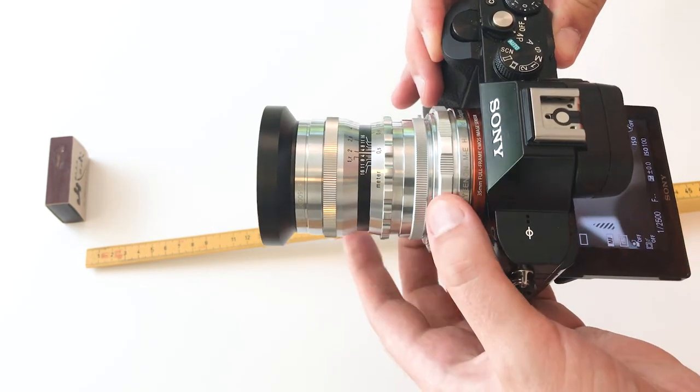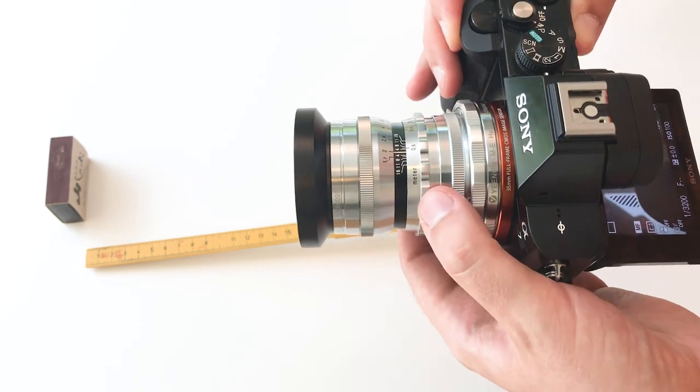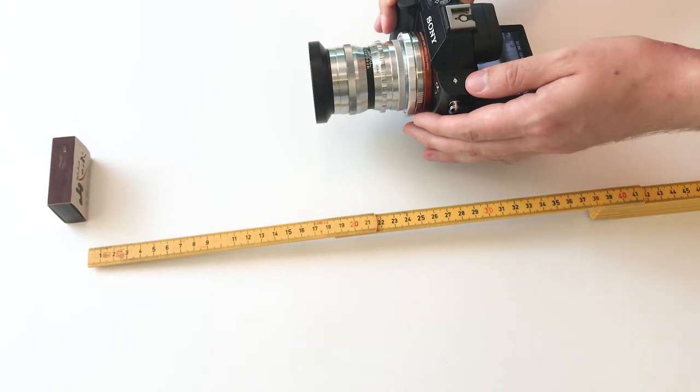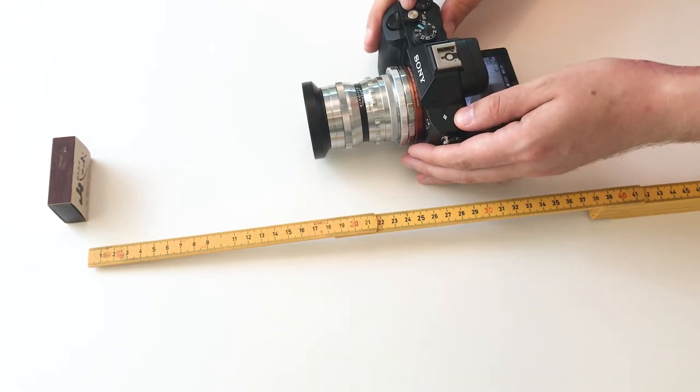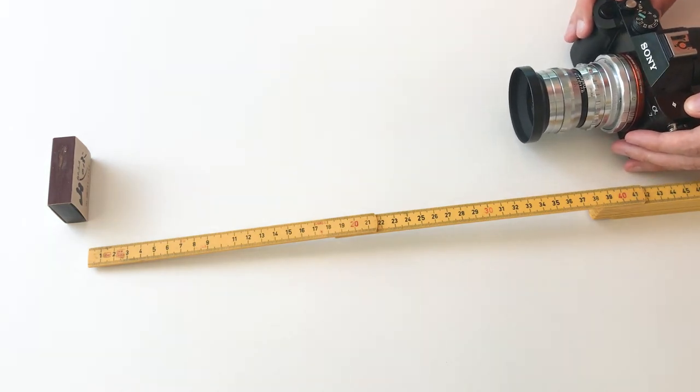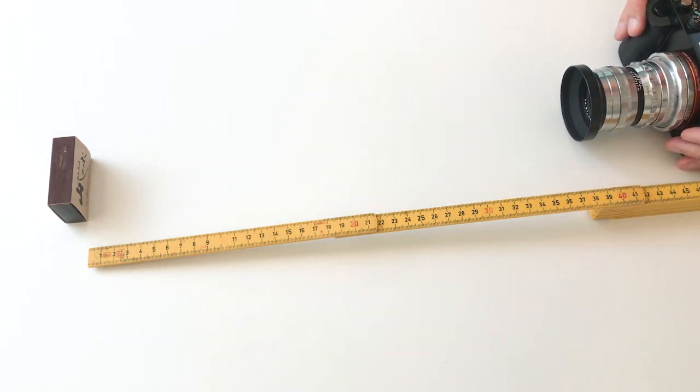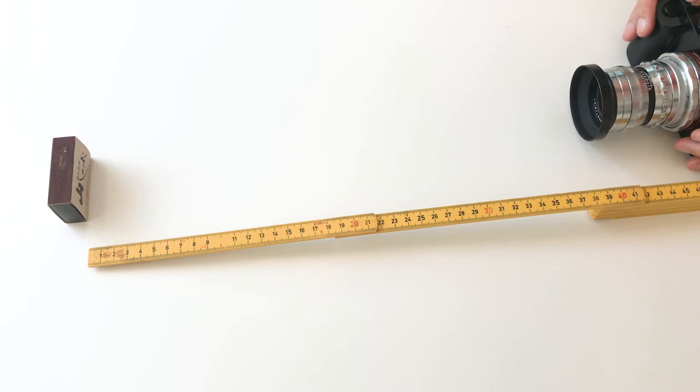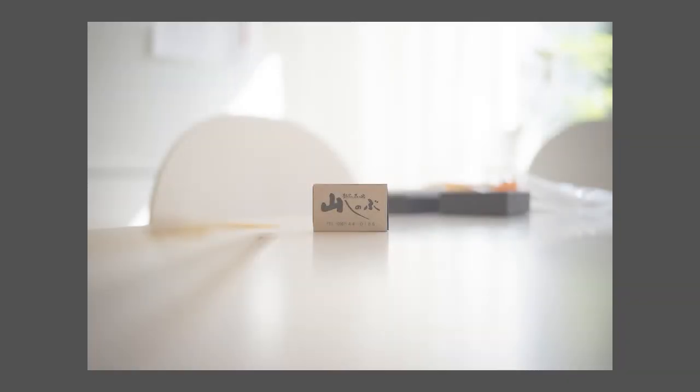I'm setting the 35 millimeter lens to the retracted helicoid setting. And let's see what the minimum focusing distance on this Voigtlander 35 millimeter lens is. It also seems to be around 45 centimeters, as with the 21 millimeter lens.